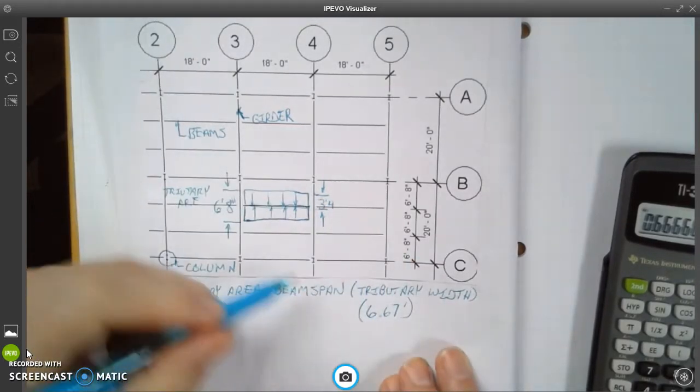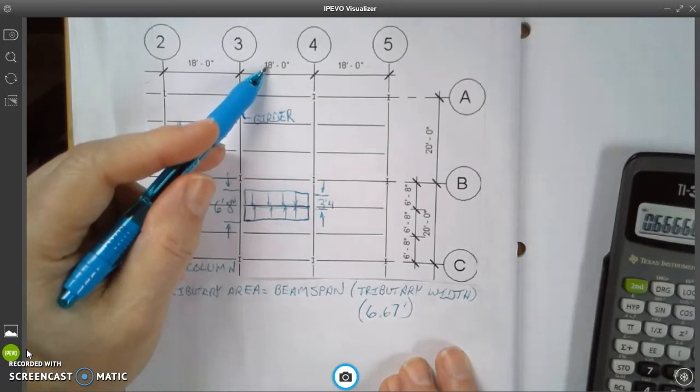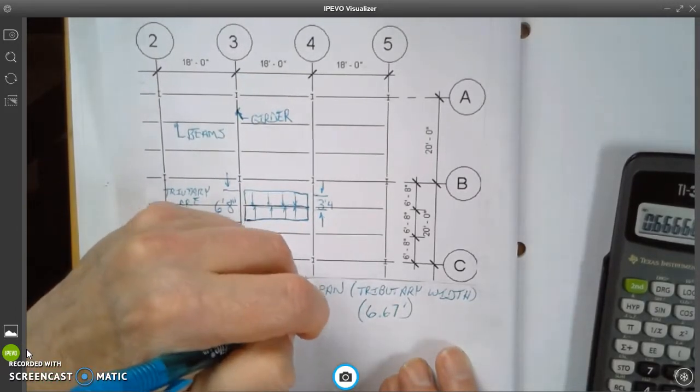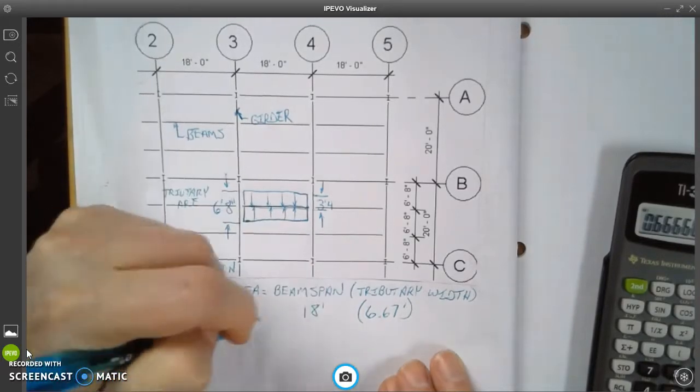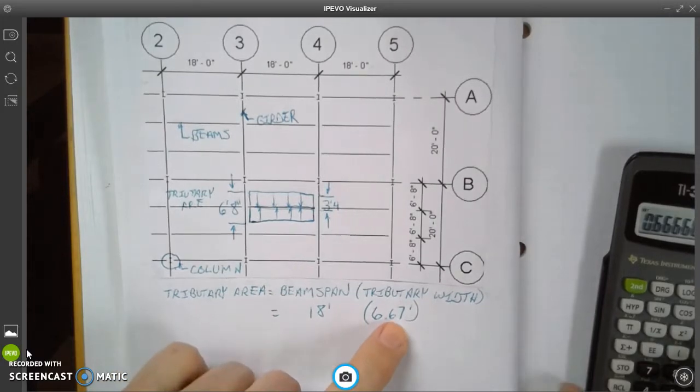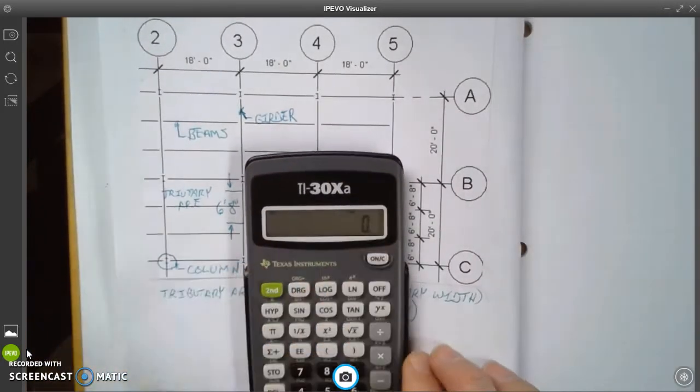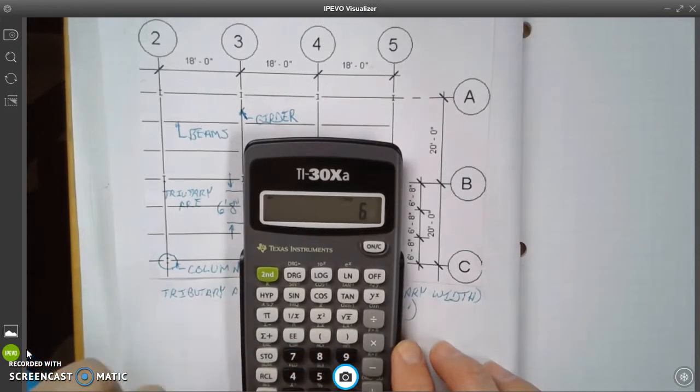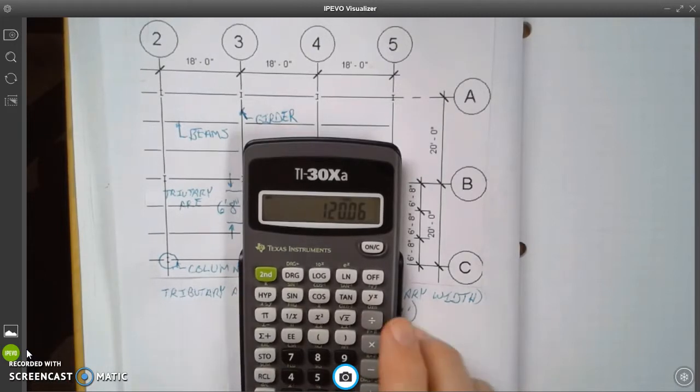The beam span is 18 feet right here, so there's no need to convert anything. So 18 feet. And what I'm going to do is I'm going to multiply the 18 times 6.67. So 18 times 6.67, that's going to give me 120.